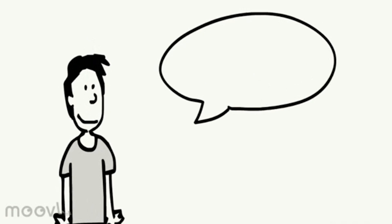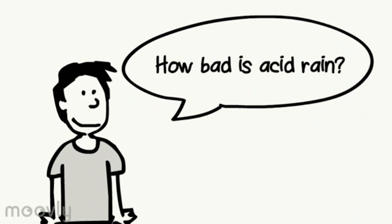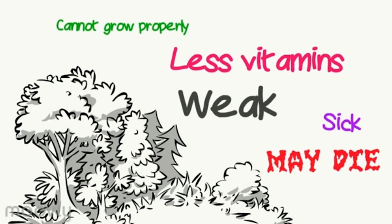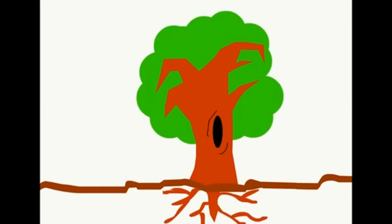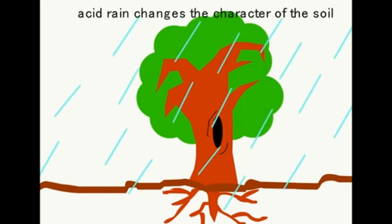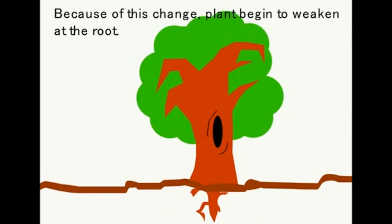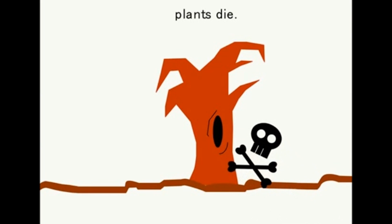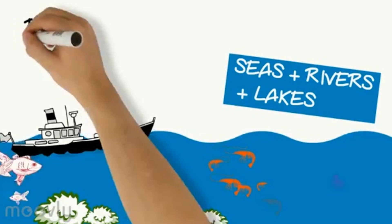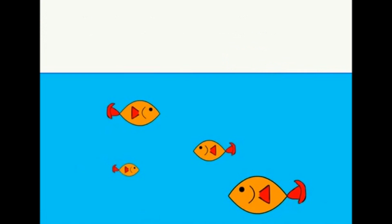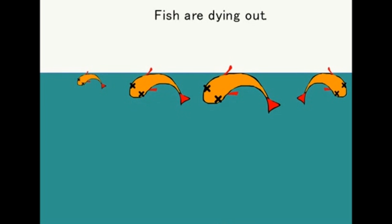The question is, how bad is acid rain? Simply, it can cause plants to die. The acid rain changes the character of the soil, causing the roots of the plants to begin to weaken, and they die. For marine life, the pH value of water becomes too acidic, causing aquatic life to die as well.